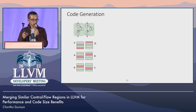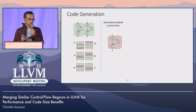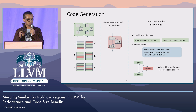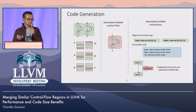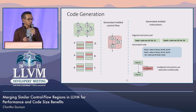Once we have the alignment, code generation is straightforward. We start by generating the merged control flow graph, then fill in the basic blocks using the instruction alignment. For each aligned instruction pair, we generate a merged instruction and may need to add extra select operations if the input operands of the aligned instructions don't match. For unaligned instructions, we have to execute them conditionally by adding extra basic blocks and branches, since some instructions may have side effects. We consider the cost of doing this in our cost model.